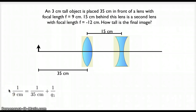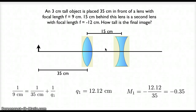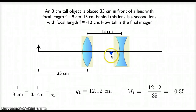I set up my lens equation for lens number 1. Solving this equation for Q1, I get that Q1 is a little over 12 centimeters. Positive, meaning that this image is somewhere to the right — this is where the image from the first lens will show up. With Q1 and P1, I can calculate the magnification for this first lens, and I get negative 0.35. My image from the first lens is a little over 12 centimeters past lens number 1, about a third the size of the original object, and because the magnification is negative, this first image is inverted.